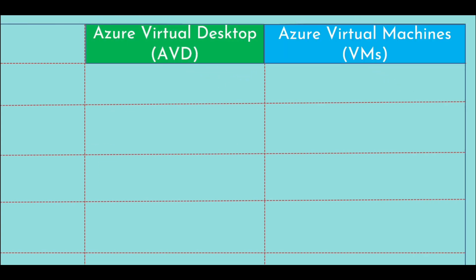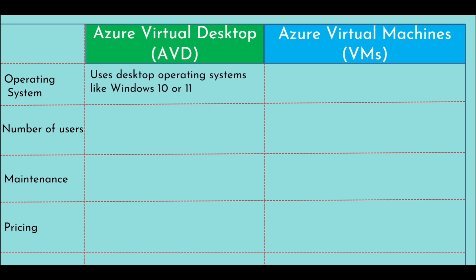Now let's have a look at the difference between Azure Virtual Desktop and Azure Virtual Machines. We will be looking at differences in three areas. First is the operating system. Azure Virtual Desktop uses a desktop operating system like Windows 10 or 11. However, Azure Virtual Machine can use either a desktop or server operating system such as Windows Server 2012, Windows Server 2016, and so on.